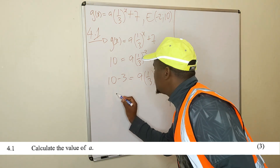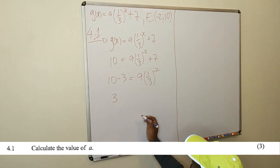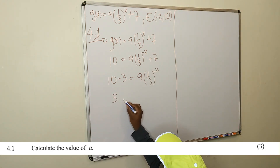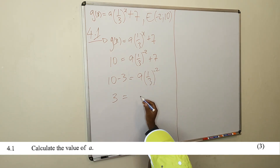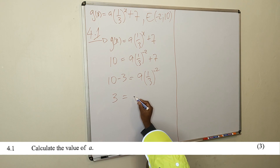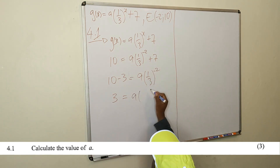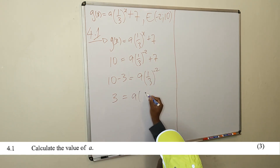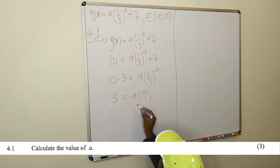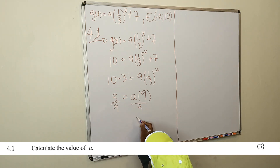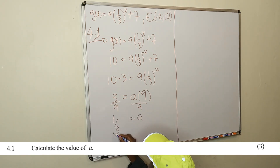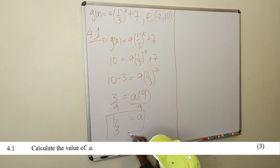So this gives us 3 equals a times (1/3) raised to -2. You can calculate this on your calculator. You'll find that (1/3) raised to -2 is 9. So 3 equals a times 9, and dividing both sides by 9, a is equal to 1/3.